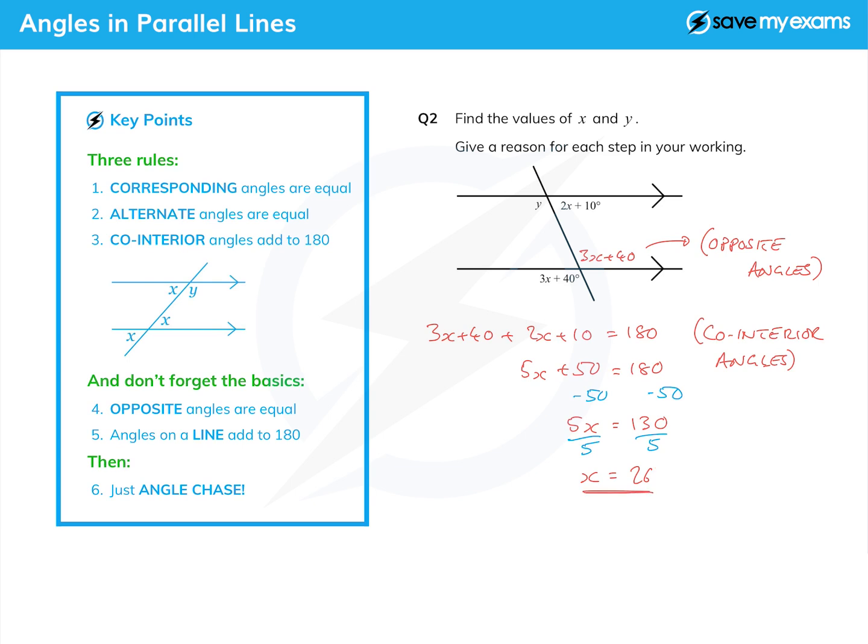How do I find y? Well, if you look at this, I can see that y plus 2x plus 10 must equal 180. Or I could say that y and 3x plus 40 are alternate angles. So I'm going to write that down: y equals 3x plus 40. I did say there was more than one way of doing this. So I can now just write down that y equals 3 times 26 plus 40. Three 26s are 78, plus 40 is 118.